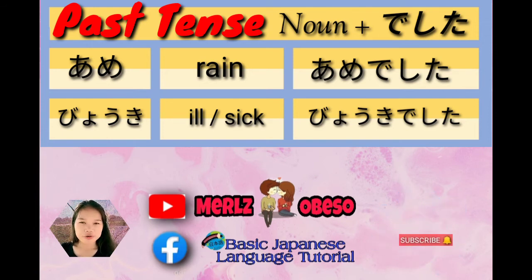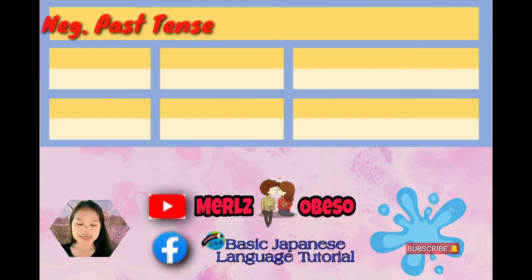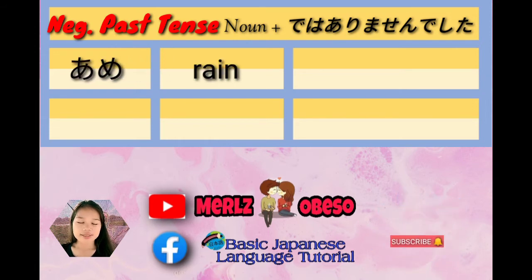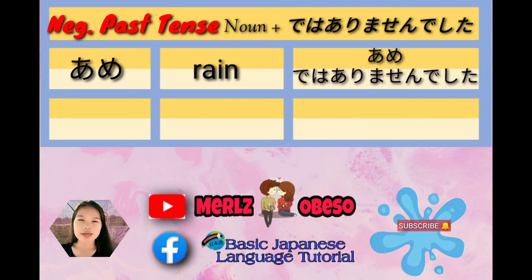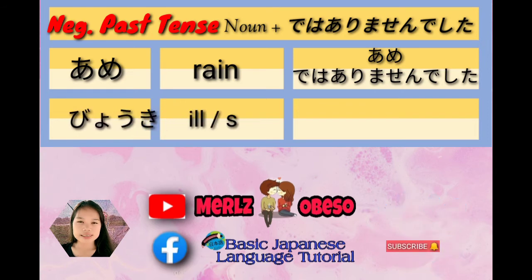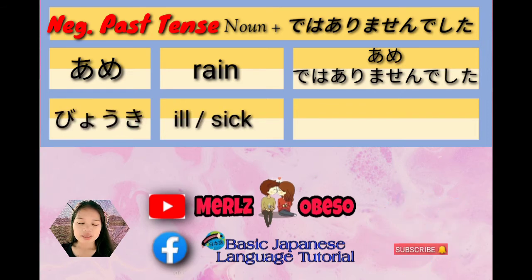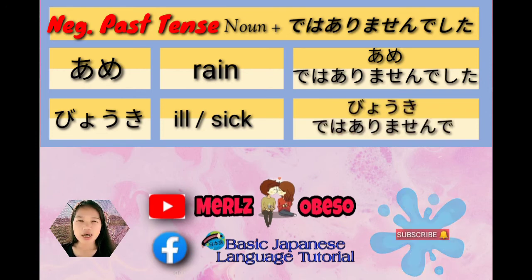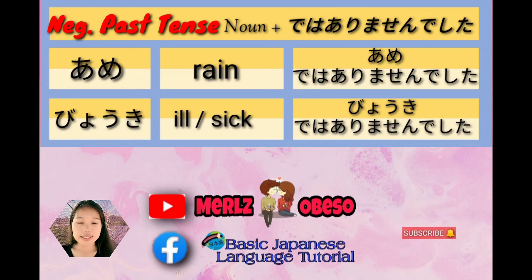So, fourth subform: negative past tense. Noun and ad dewa arimasen deshita. First example: ame, rain. Noun and ad dewa arimasen deshita magiging ame dewa arimasen deshita — or it was not raining. Next, buki, ill or sick. Noun and ad dewa arimasen deshita magiging buki dewa arimasen deshita — in English, I was not sick or I was not ill.